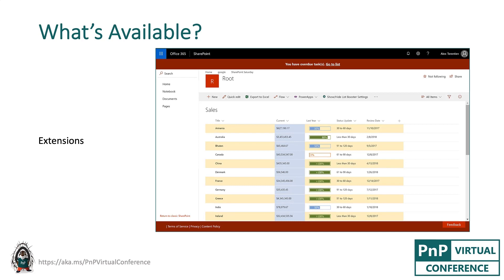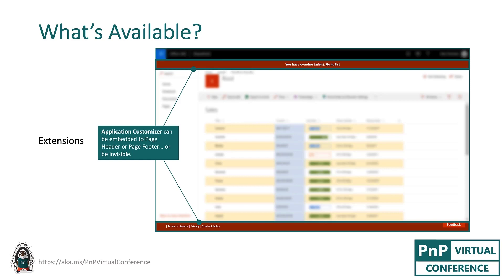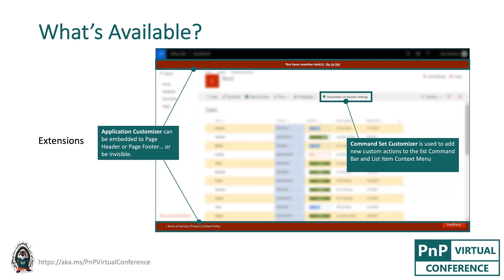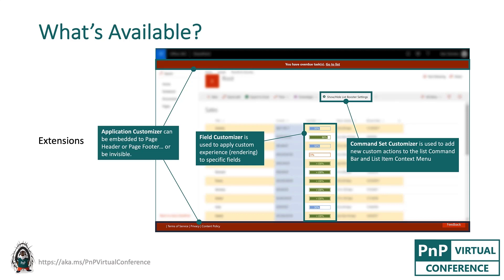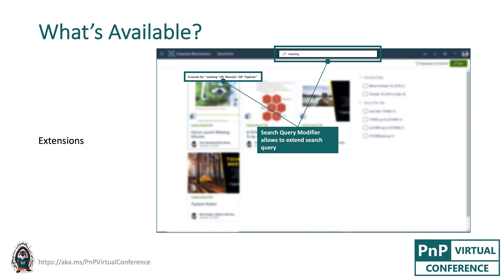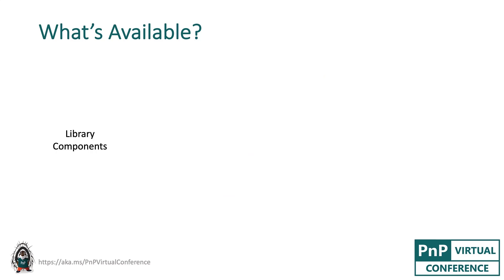The next one is extensions, and extensions allow you to extend or customize modern SharePoint UI and modern SharePoint experience. Currently, there are four types of extensions available. The first one is Application Customizer, that allows you to add custom page header and page footer, or just inject custom CSS or JavaScript to the page. The next one is Command Set Customizer, that allows you to add custom buttons to list command bar or list items context menu. Field Customizer allows you to provide custom rendering to list item fields. And the last available extension is Search Query Modifier, that allows you to extend Search Query before it's actually sent to server for processing. In this sample, the user typed 'meeting', and we translated it to Turkish and Spanish, and got the results for all three languages.